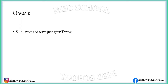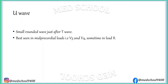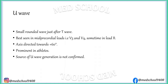U wave is a small rounded wave just after T wave. It is best seen in mid-precordial leads, i.e. lead V3 and V4, and sometimes in lead 2. Its axis is directed toward 60 degrees in the frontal plane. It is seen prominently in athletes. The source of U wave generation is not confirmed, but it is thought to be generated by repolarization of papillary muscles.